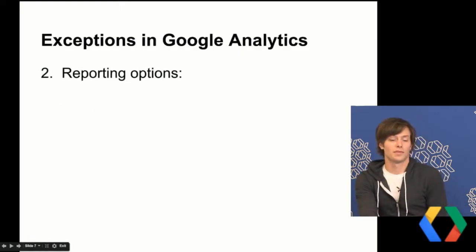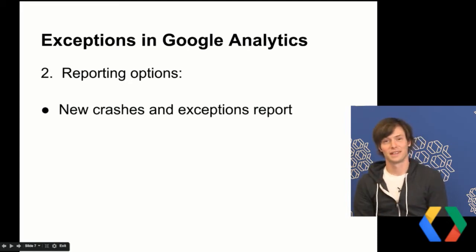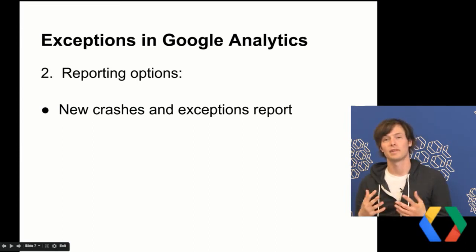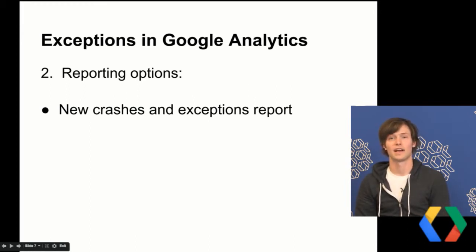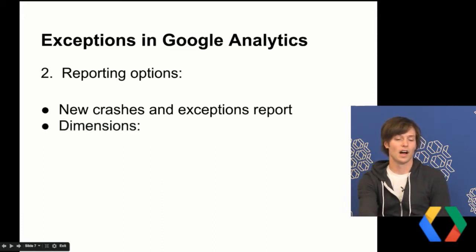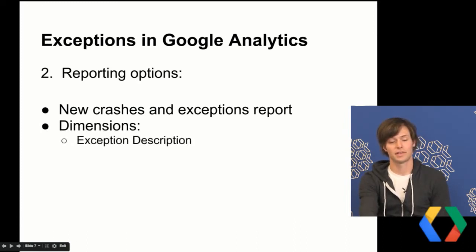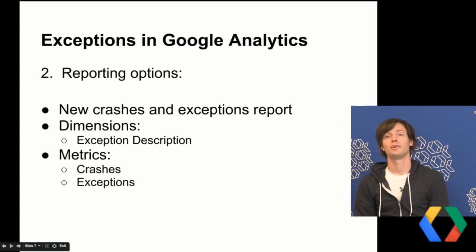As far as reporting options go, once you have your data, we have a crashes and exceptions report — that's going to be the go-to for most people to see crash data trending by release version. It's in the engagement section on the left-hand nav. Additionally, we have the exception description dimension and the crashes and exceptions metrics, which you can use in custom reports, dashboards, and as custom segments. Note that for those using the core reporting API, these dimensions and metrics are not yet available but will be coming soon.